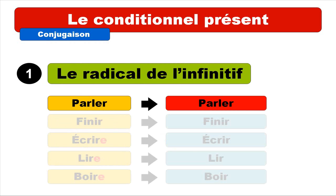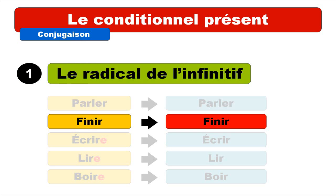So let's see how we get this radical de l'infinitif. For the regular verbs it's quite easy, because like parler, you don't need to change the infinitive form — so you just take parler. Second example is finir: same thing, second group of verbs, regular, so you get finir.